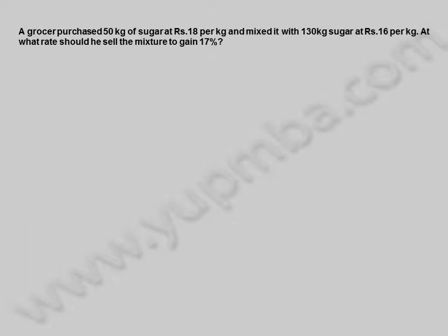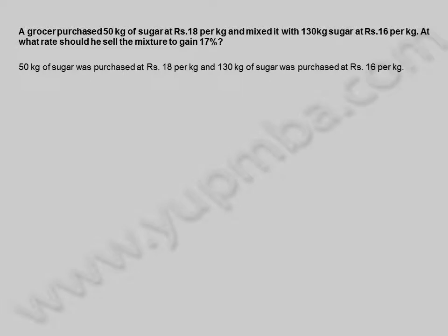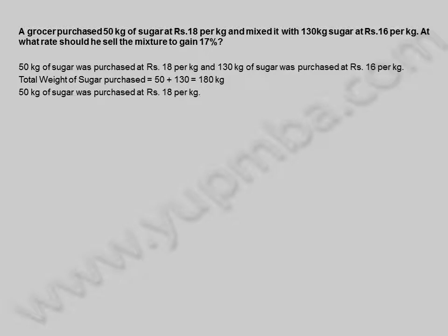Let us see another example. A grocer purchased 50 kilograms of sugar at 18 rupees per kilogram and mixed it with 130 kilograms of sugar at 16 rupees per kilogram. At what rate should he sell the mixture to gain 17 percent? 50 kilograms of sugar was purchased at 18 rupees per kilogram and 130 kilograms was purchased at 16 rupees per kilogram. Total weight of sugar purchased is equal to 50 plus 130, which equals 180 kilograms.